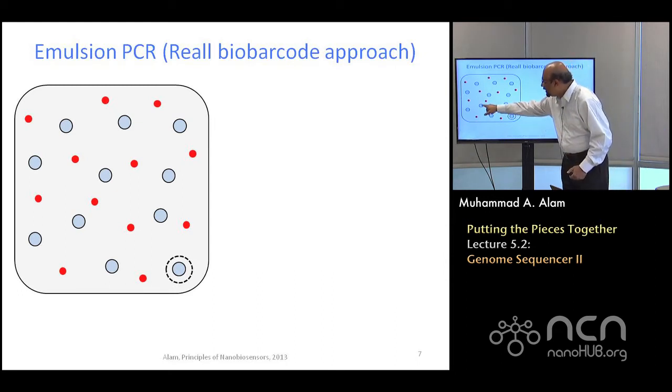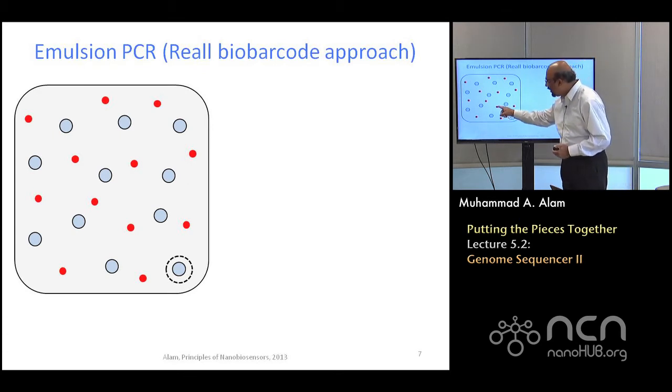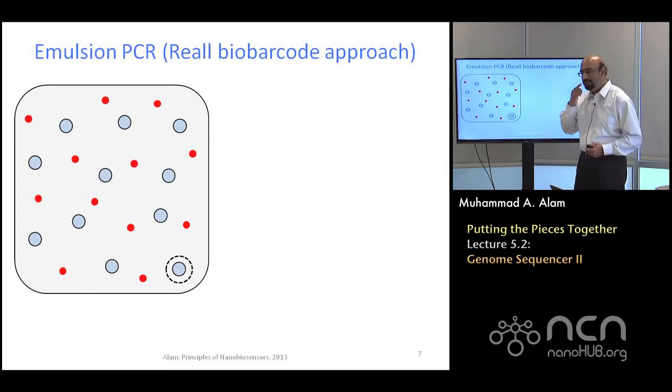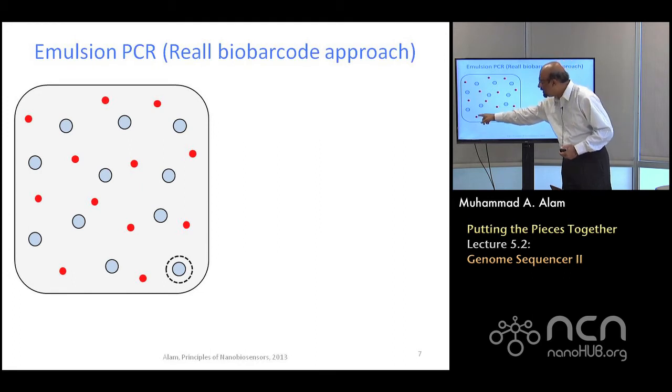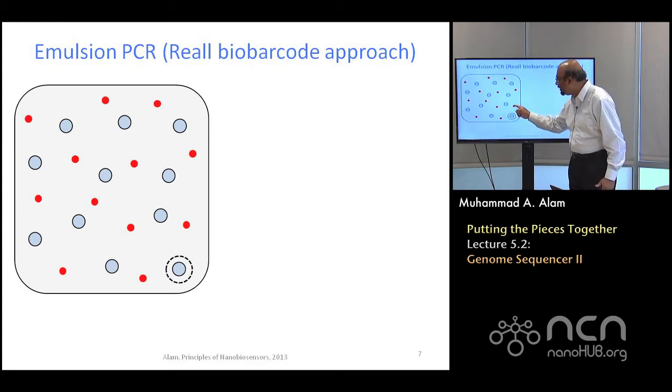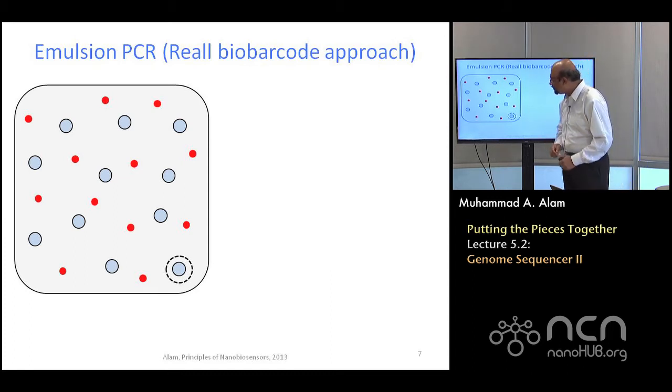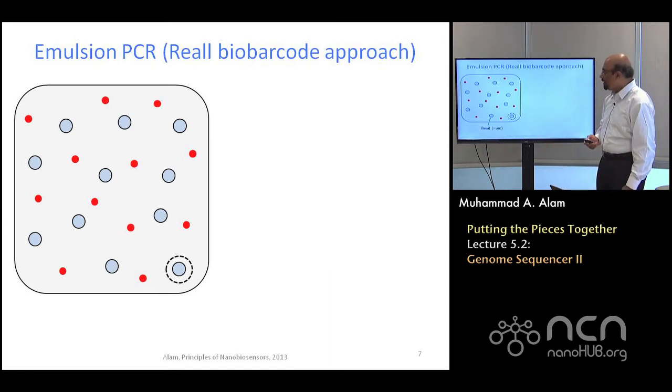The approach is something called an emulsion PCR, sort of having 40 million beakers within a single beaker. This is how it works. Assume that you have a set of beads, the blue beads. These beads may remind you about the bio barcode approach that we talked about. Each red DNA, although they are all colored the same, but really you should be thinking about as if these are the DNAs chopped from the 3 billion base pair long thing and then 100 base pairs.